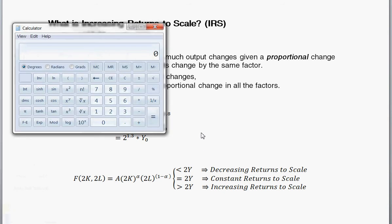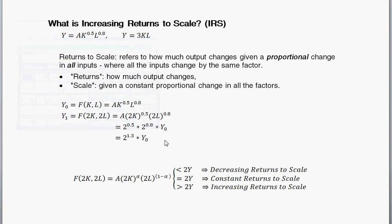And 2 to the 1.3, what is that? So, you got 2 raised to the 1.3 is equal to 2.4622. So, that's about 2.4622 times the initial level of output.